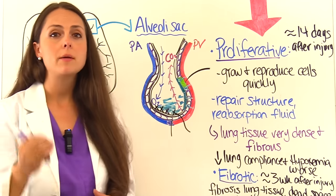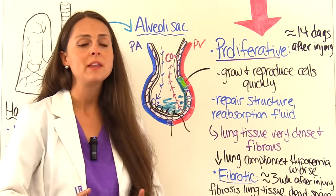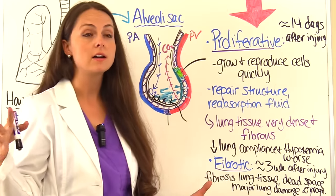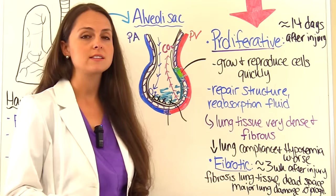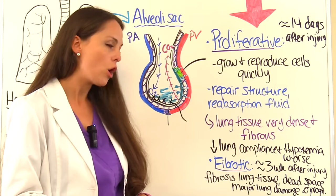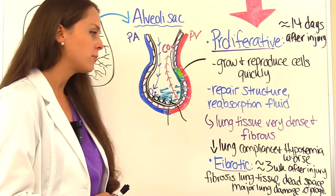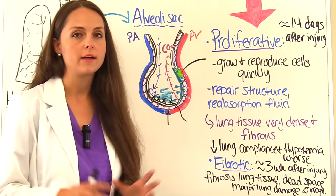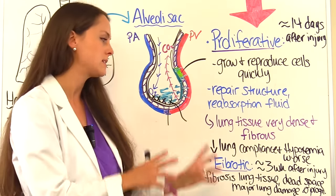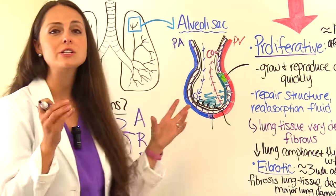About three weeks after injury, some patients enter the fibrotic phase, where fibrosis of lung tissue develops. The patient essentially has dead space in the lungs with no gas exchange occurring. Patients who reach this phase have major lung damage and a very poor prognosis. Again, not all patients reach this phase — this represents the worst-case scenario.